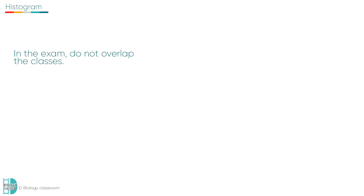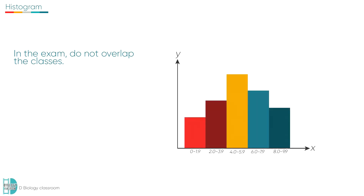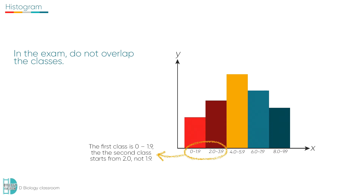In biology exams, we do not overlap the classes. For example, if your first class is 0 to 1.9, the next one should be 2.0 to 3.9 — you should not include 1.9 again.